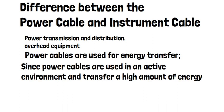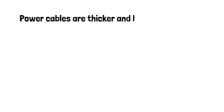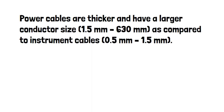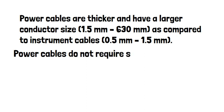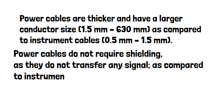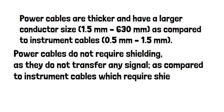4. Power cables are thicker and have a larger conductor size, 1.5 mm to 630 mm, as compared to instrument cables, 0.5 mm to 1.5 mm. 5. Power cables do not require shielding, as they do not transfer any signal, as compared to instrument cables which require shielding.